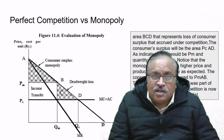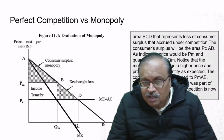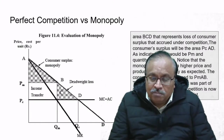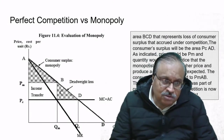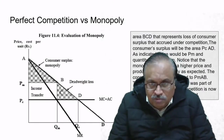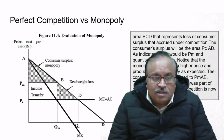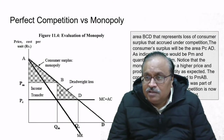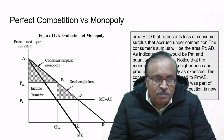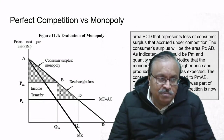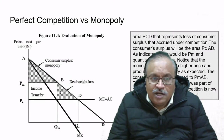Now, perfect competition versus monopoly. There is always a contrast between perfect competition and monopoly: in perfect competition the market commands the price, whereas in monopoly the firm commands the price. Looking at area BCD on the graph, this area represents the loss of consumer surplus that accrued under competition. The consumer surplus under competition is the area BCAD—from PC going up to A.